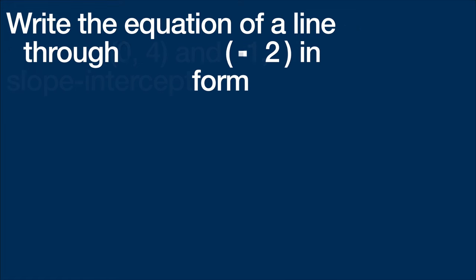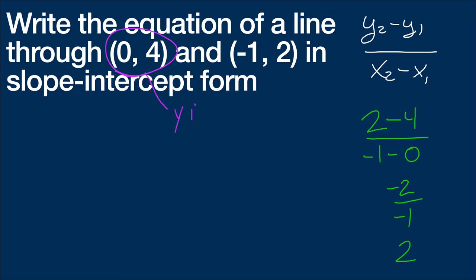All right, this says to write the equation of a line through (0, 4) and (-1, 2) in slope-intercept form. So before we can do this, we actually have to find the slope. Reminder, the slope formula is y2 minus y1 over x2 minus x1. So in this case, 2 minus 4 over -1 minus 0, this becomes -2 over -1, or 2. That's my slope. Hey, guess what? This point right here, it's the y-intercept, at which point my slope is, so y equals 2x plus 4.